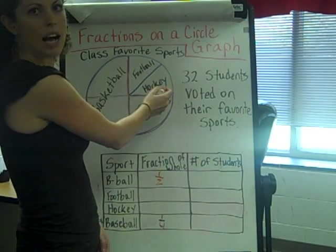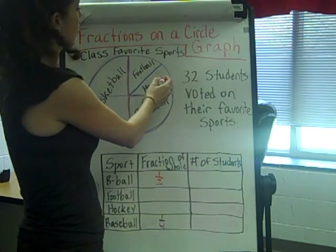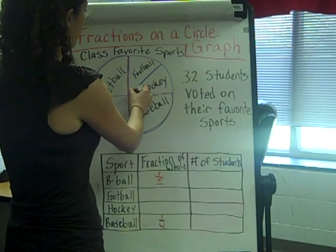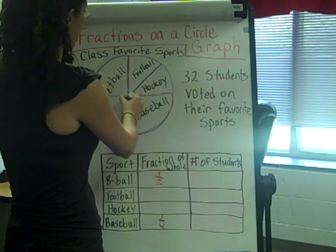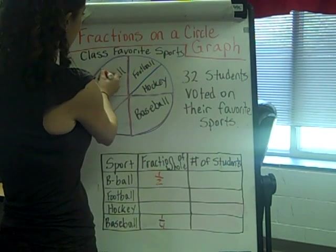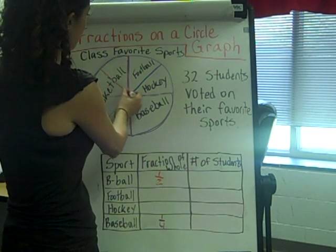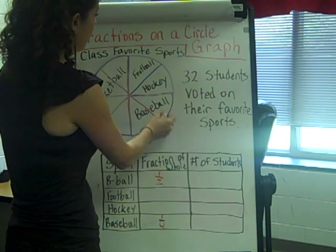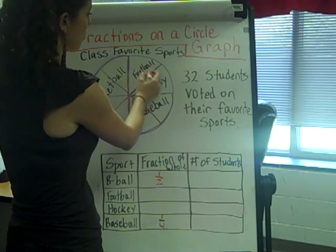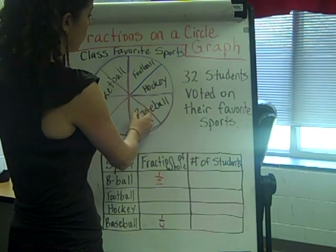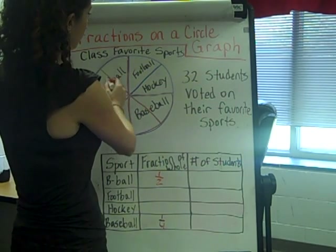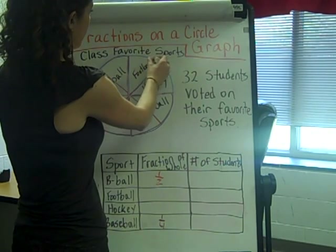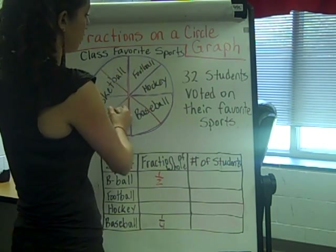Last are football and hockey, which are the same size and the smallest. If I continue this line and break these into the same even sections, I now have eight equal sections, and both football and hockey are each one eighth.